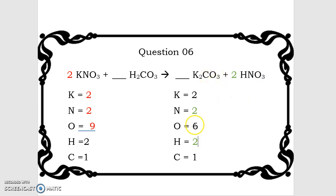Plus the three here is going to give us a grand total of nine. If we check across our reactants to products, two potassiums, two nitrogens, nine oxygens, two hydrogens, and one carbon. This equation is balanced.